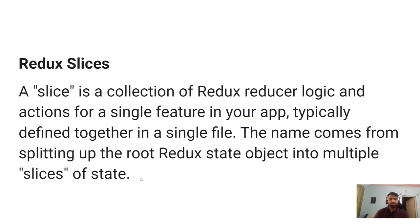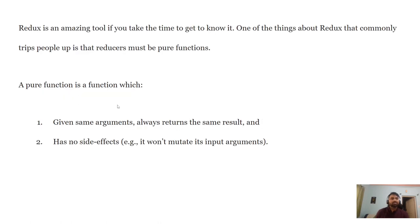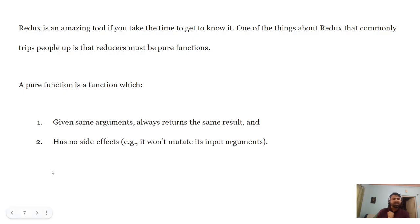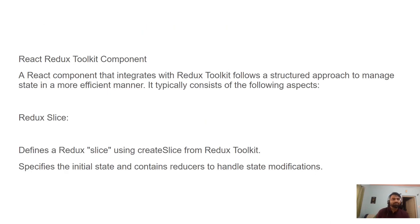People sometimes ask in interviews about reducers. Reducers are pure functions. A pure function, by definition, will always return the same result for the same arguments. It has no side effects — it won't mutate the input arguments. It will always return the same output, which we will demonstrate with an example.